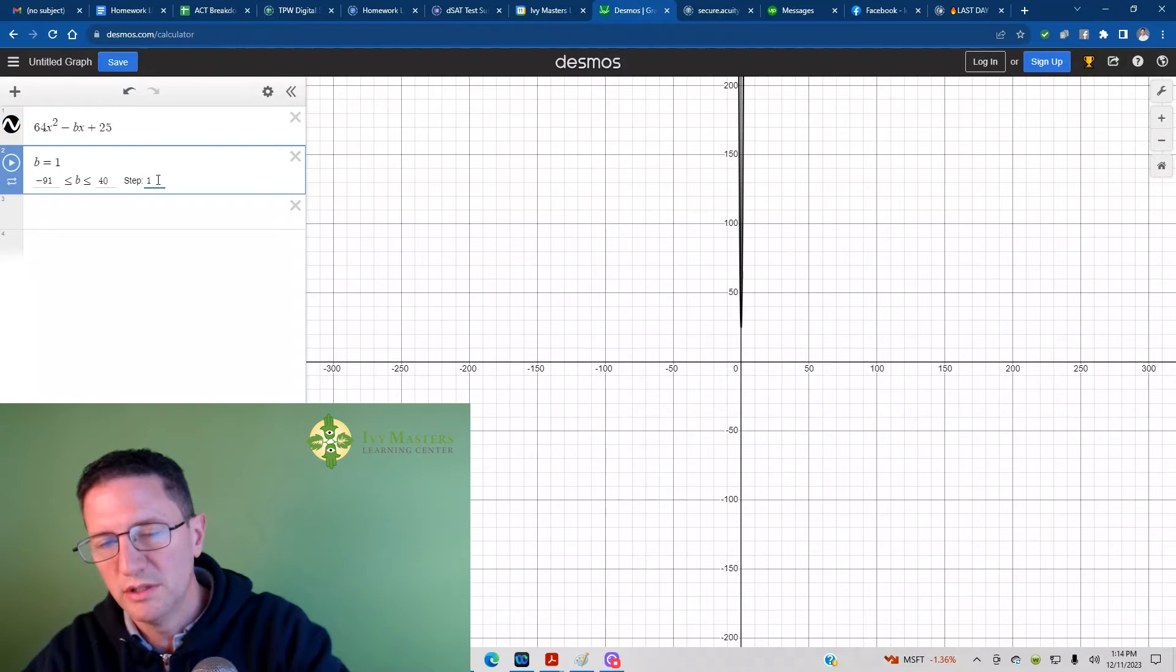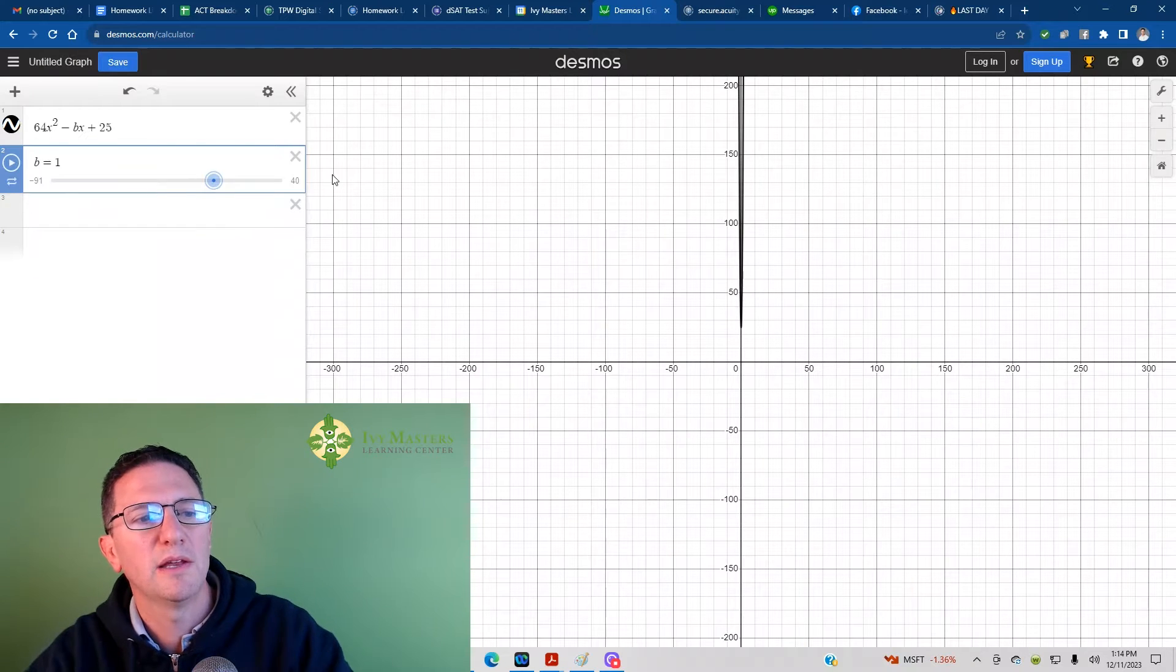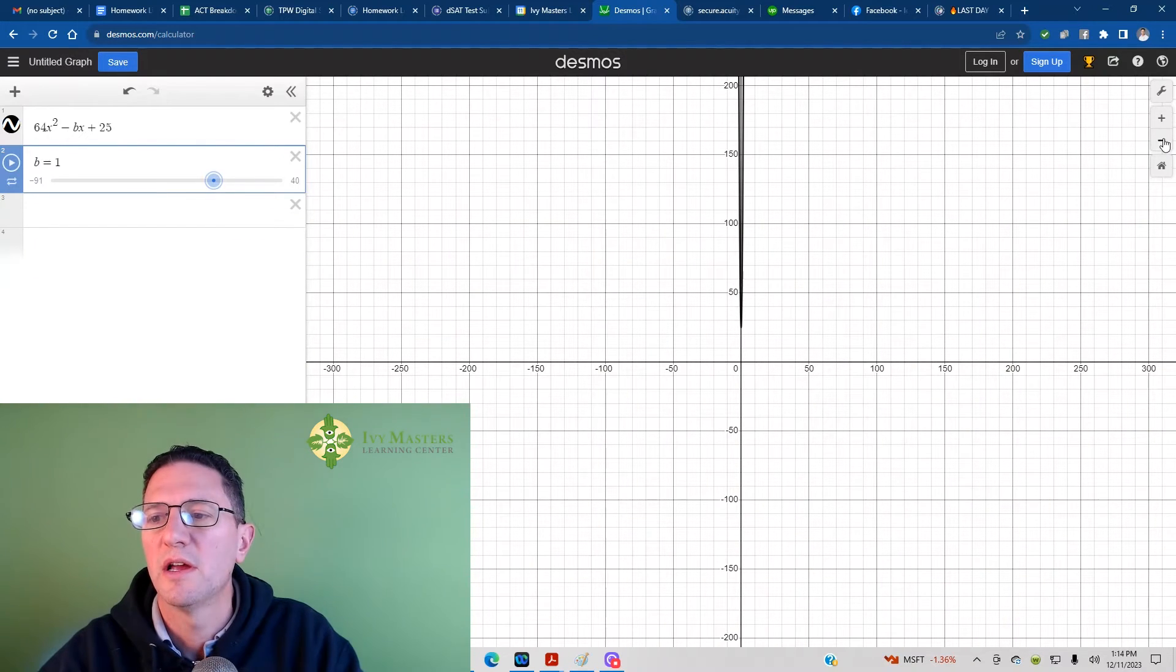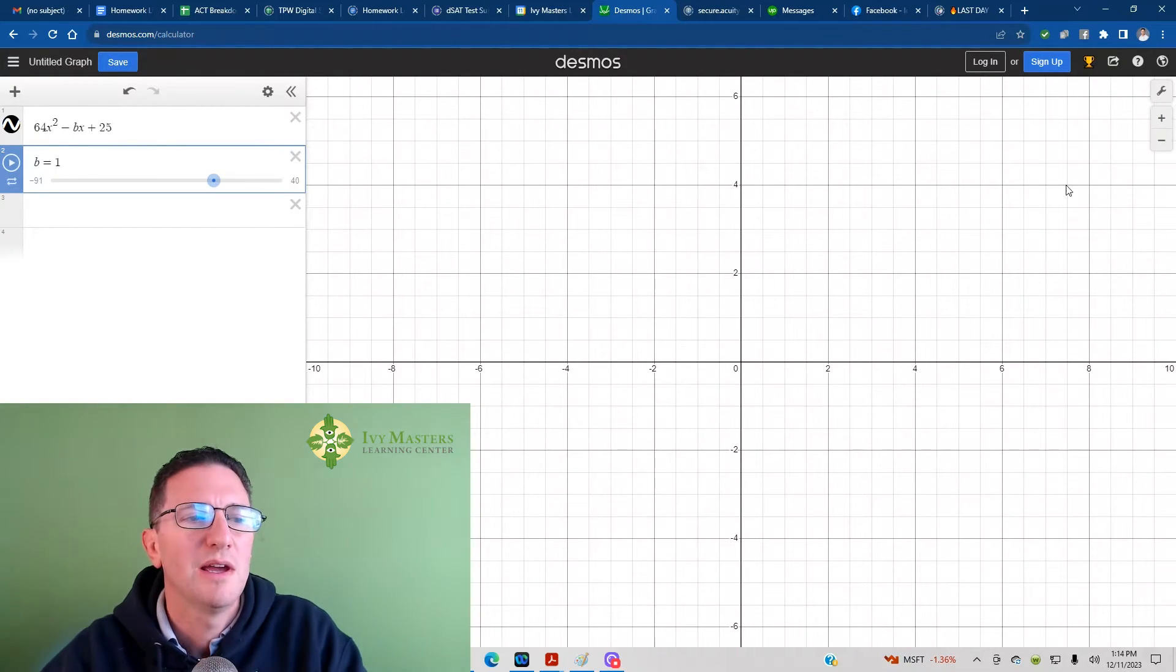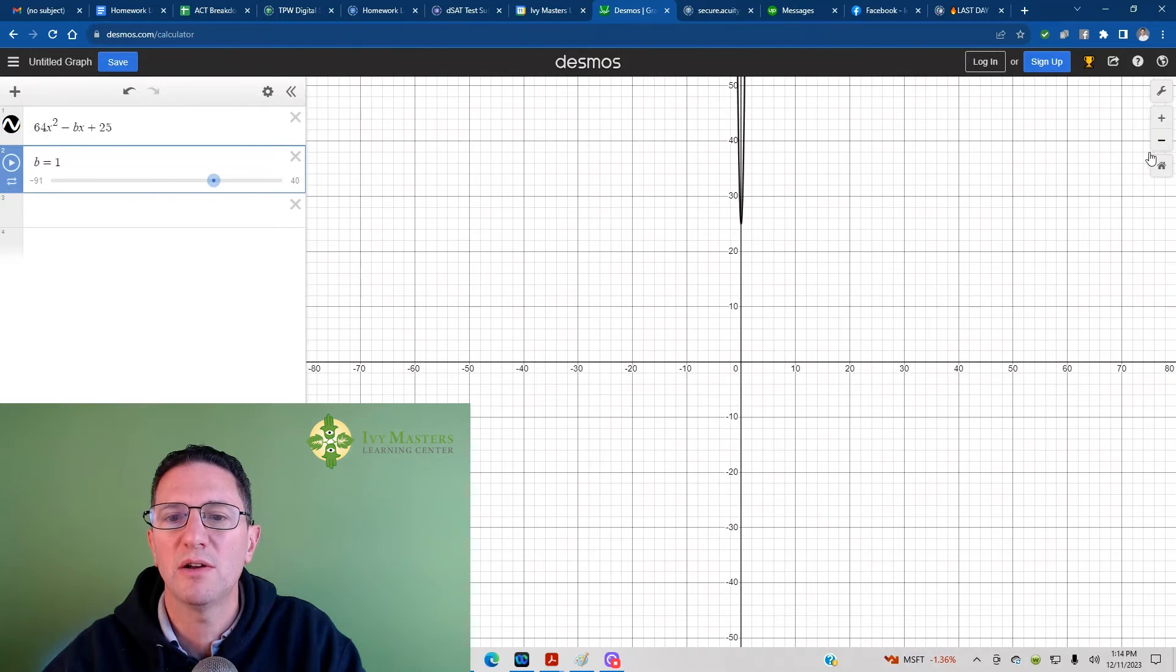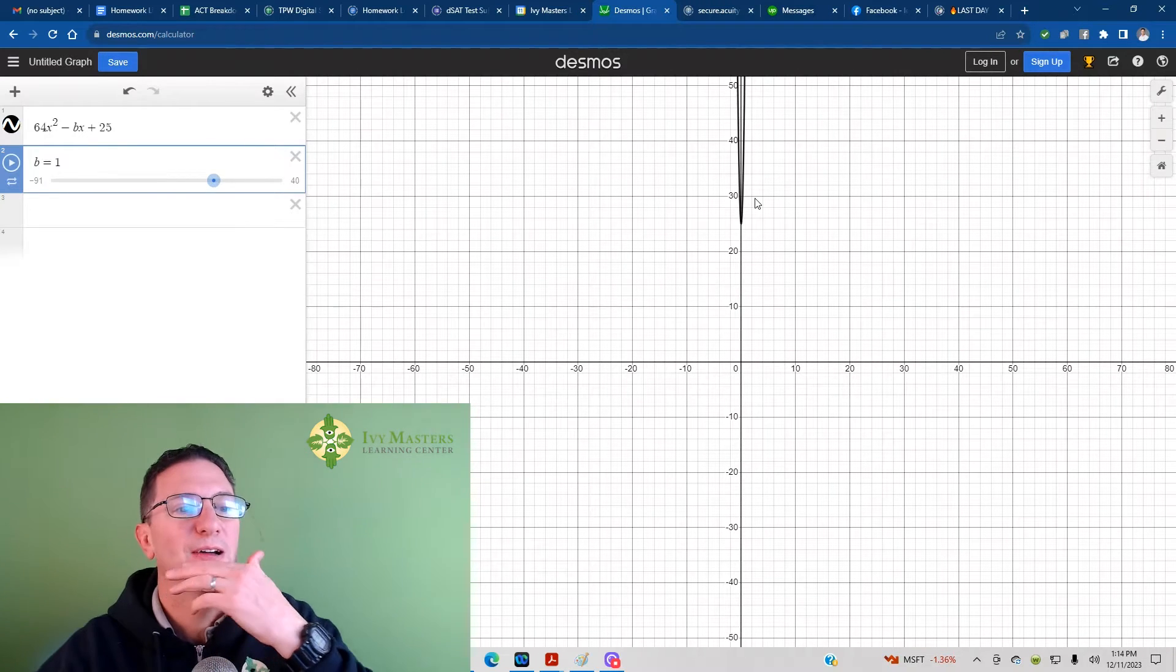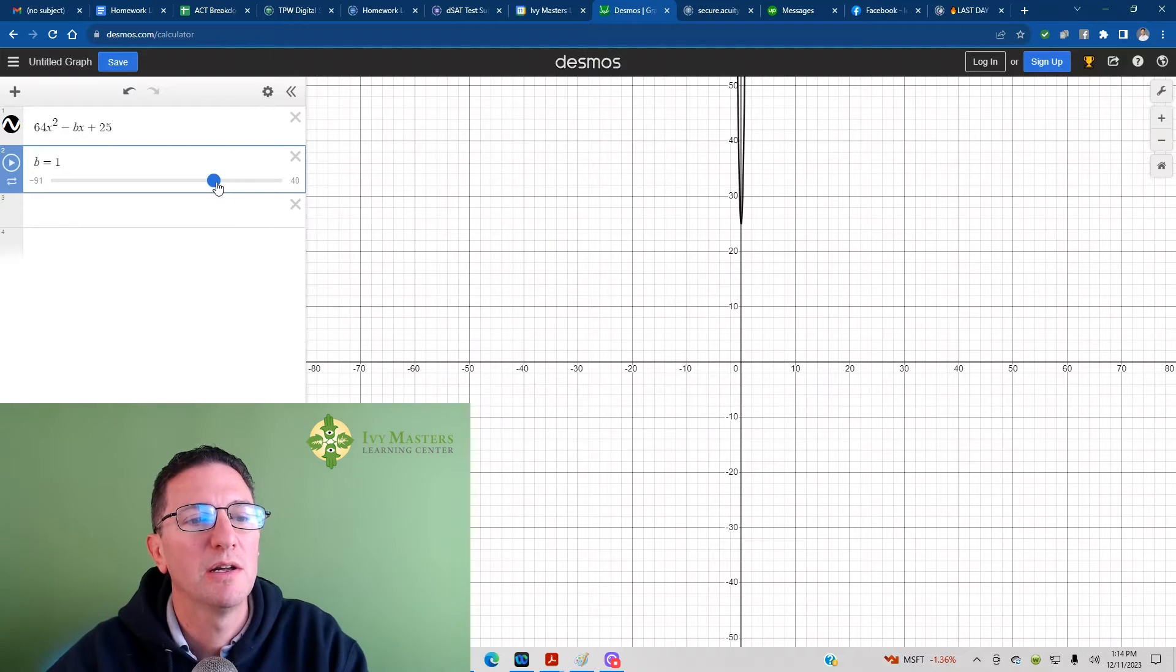Then you hit Enter, and it gives you this slider. It's going to be zoomed up to here, and you're not going to see this at all. So what you've got to do is zoom out until you see the parabola. Once you see the parabola, you can move this slider. Move it this way, it comes down. Move it this way, it goes up, and then it comes down again.